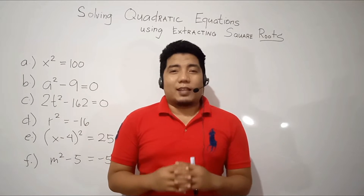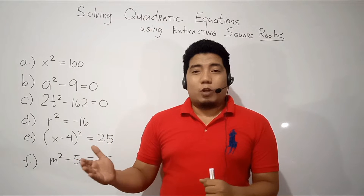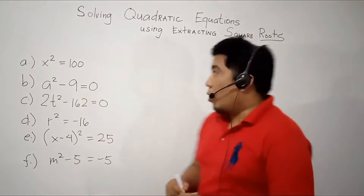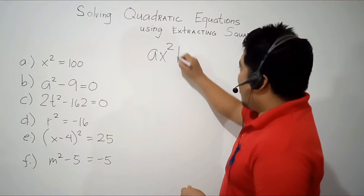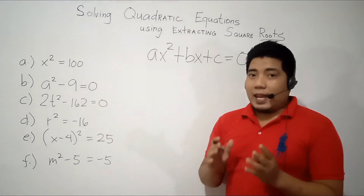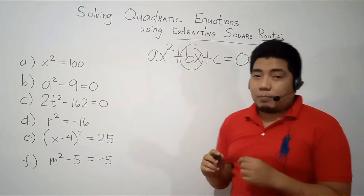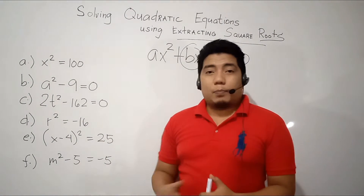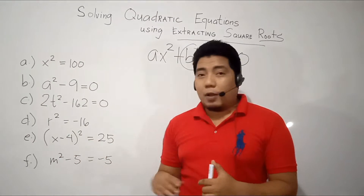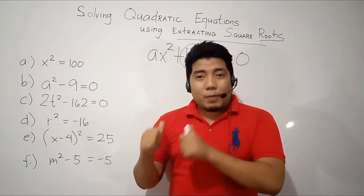The first method is known as extracting square root. This can only be applied — or mostly is applied — if our linear term is absent. We already know that the standard form of the quadratic equation is ax² + bx + c = 0. In order for us to apply extracting square root, bx should not be present. As you can see in our given examples, we don't have any linear term, except for one example. I will discuss the other exceptions in terms of using this method. Now, let's start.